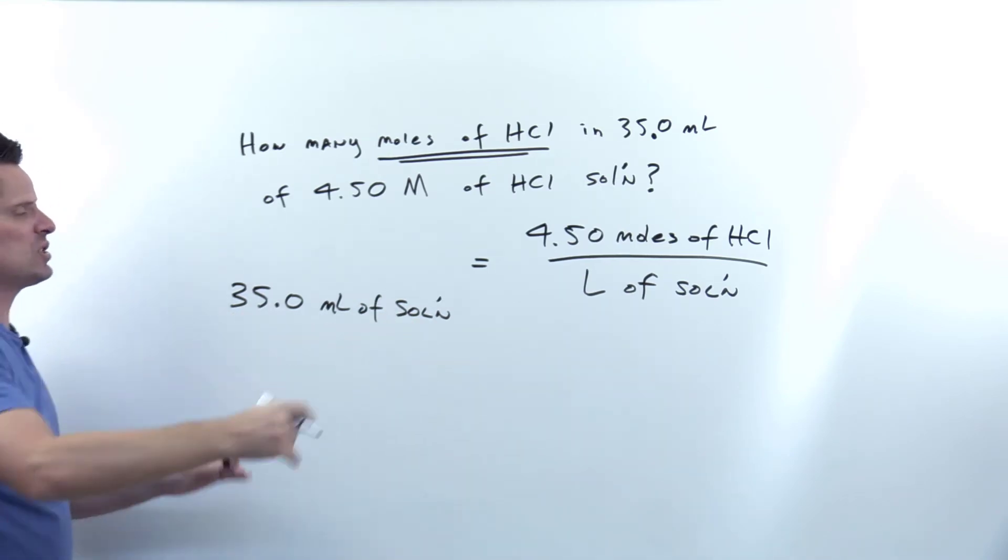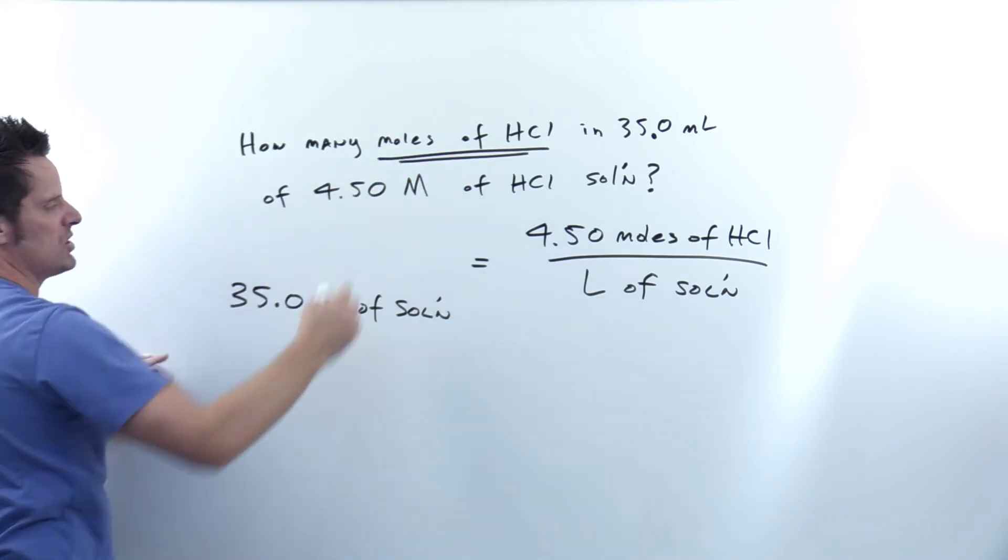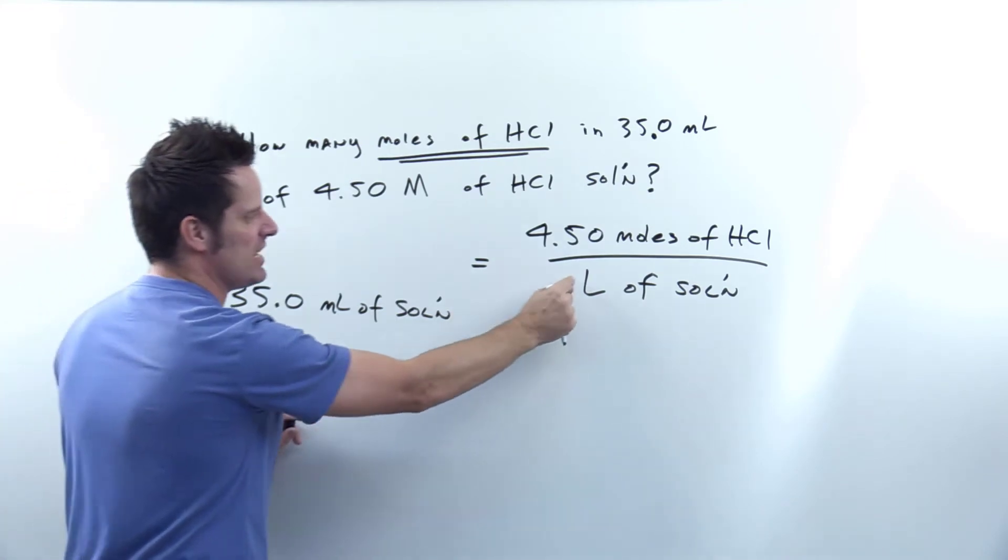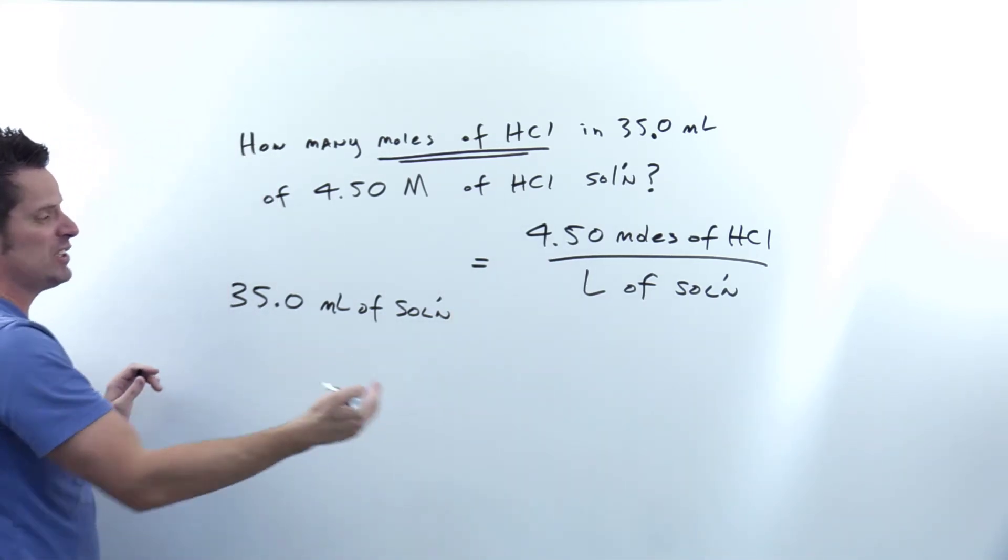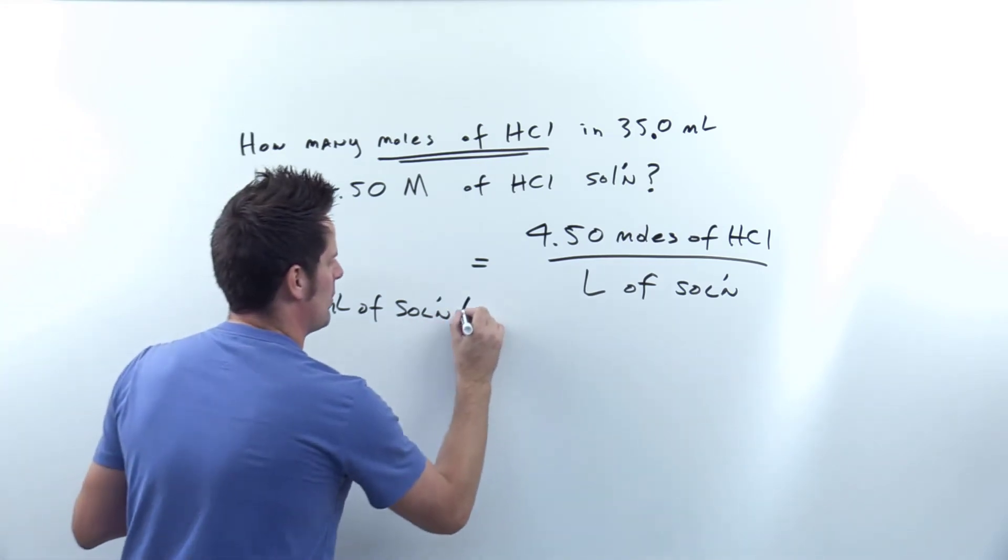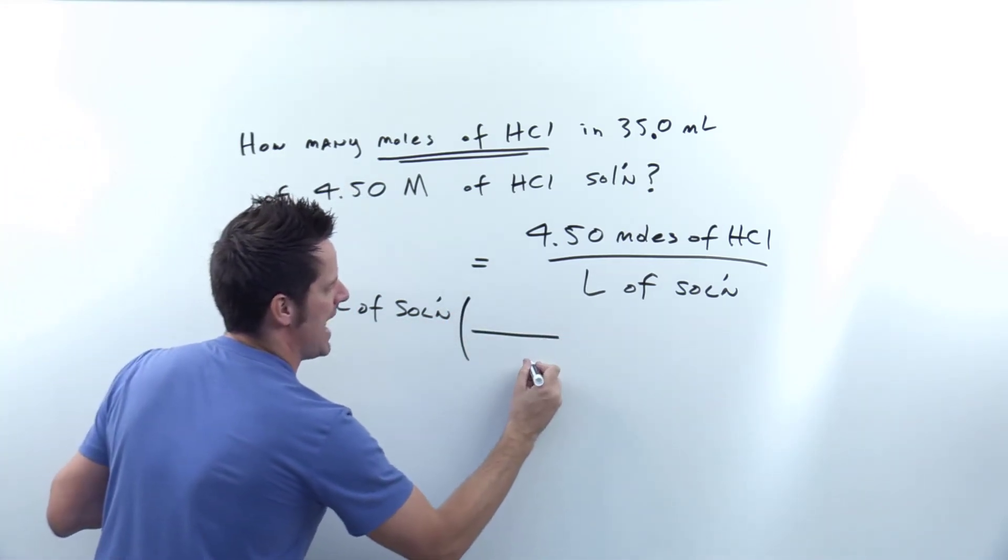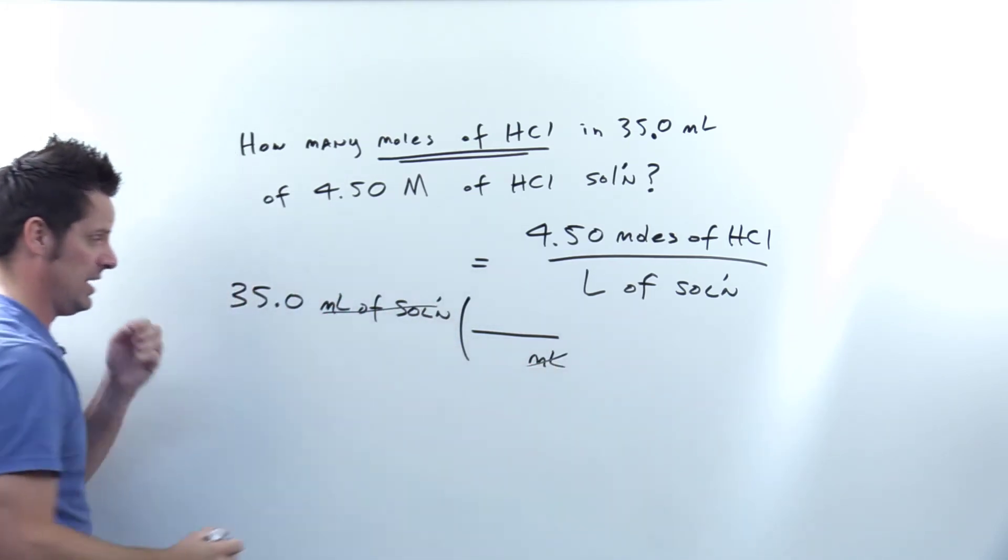So I'm going to write out these milliliters that I want, which is moles of HCl. Now I don't have milliliters anywhere in anything else. I've got liters over here. So it would help if I canceled out these milliliters and eventually got to liters, right? So I'm going to write down another set of parentheses. And my units in the denominator are going to match my units in the numerator of the previous term. Milliliters canceling out milliliters.